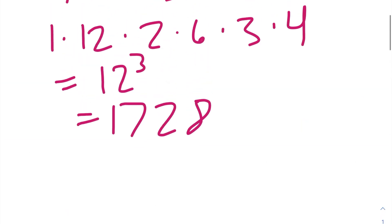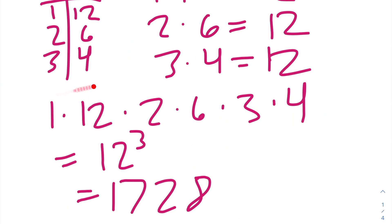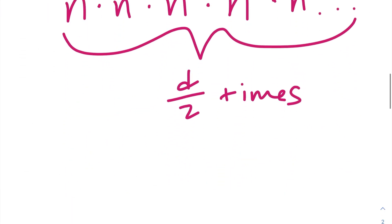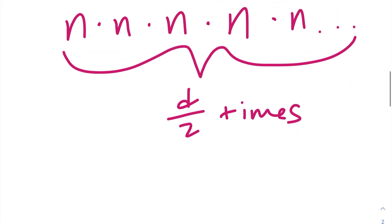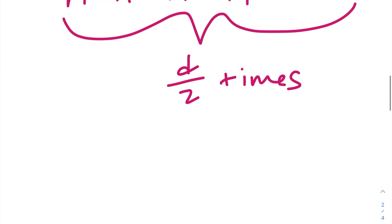Because we can order the factors so that each factor pair is next to each other, if we multiply n by itself d over 2 times, that's the same as taking n to the d over 2 power. So this must be our answer, and this should work for any number.